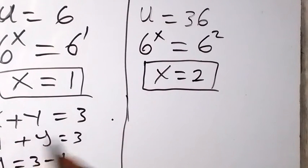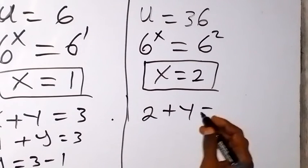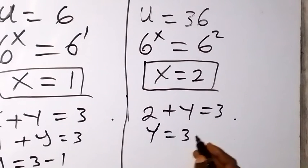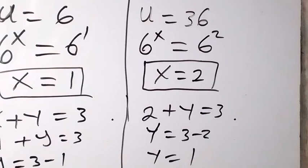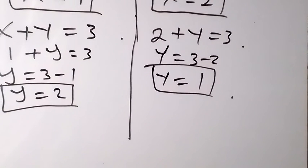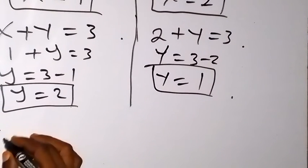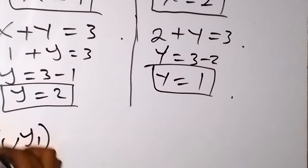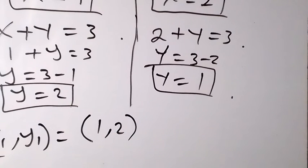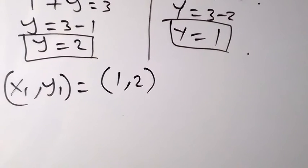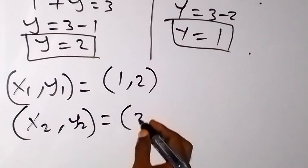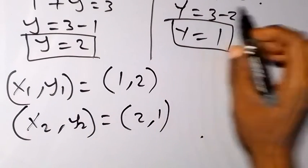When x equals 2, we find the corresponding y from x plus y equals 3. Substituting: 2 plus y equals 3, so y equals 3 minus 2, giving y equals 1. Therefore the first solution set is (x1, y1) equals (1, 2), and the second solution set is (x2, y2) equals (2, 1).